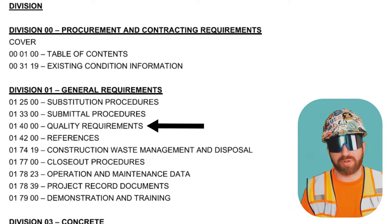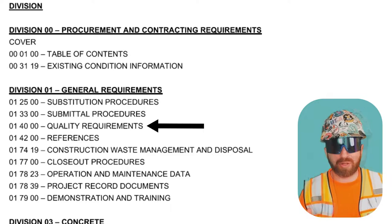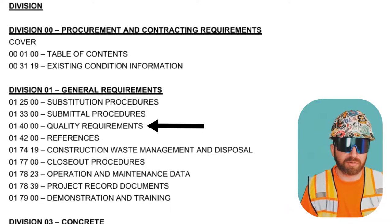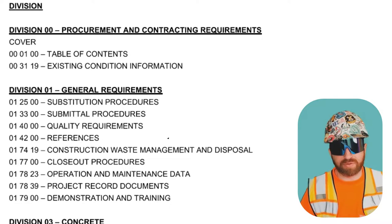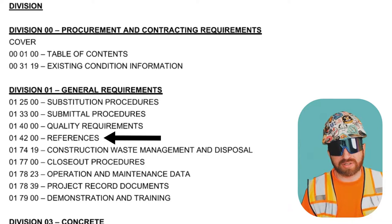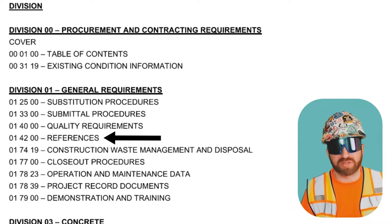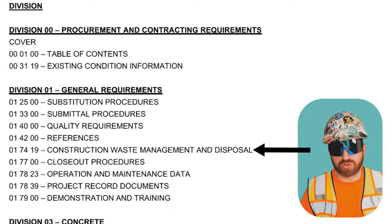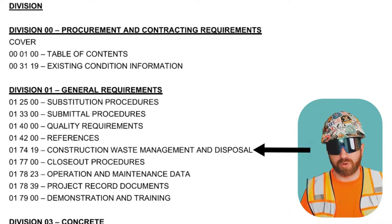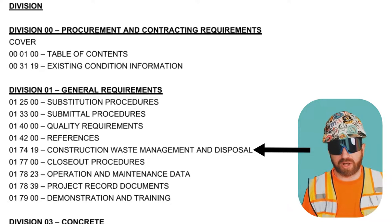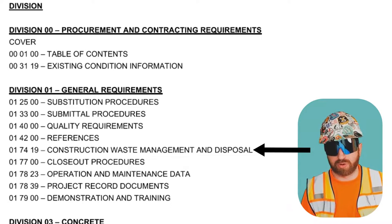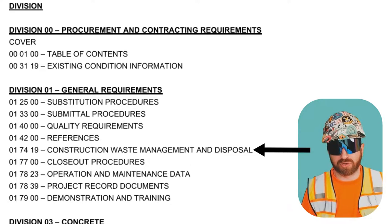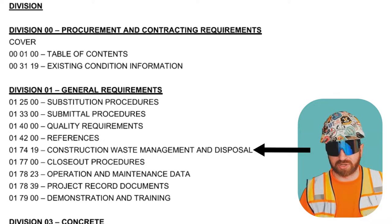Quality requirements outlines how to complete the scope to a particular standard and can also include testing requirements. References — this section usually outlines industry organizations that set the standards for building construction as it applies to this specific project. Construction waste management and disposal is usually included if you work on a LEED or green project, which outlines how material is supposed to be sorted before it goes to a landfill or recycling station.